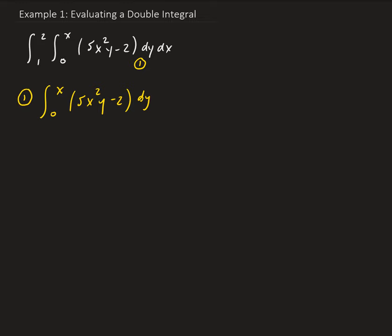For the 5x squared y term, we're going to treat x as a constant. So we're going to get 5x squared times one-half y squared, applying the power rule for y. And then the integral of 2 with respect to y is just 2y. Then we're going to evaluate this from 0 to x.